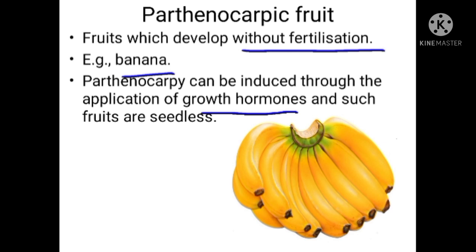Parthenocarpic fruits are normally seedless — they do not have seeds. Even banana does not have true seeds; it has very small non-fertile seeds because it is produced without fertilization. Seedless fruits can be produced by parthenocarpy through artificial means by the application of growth hormones.